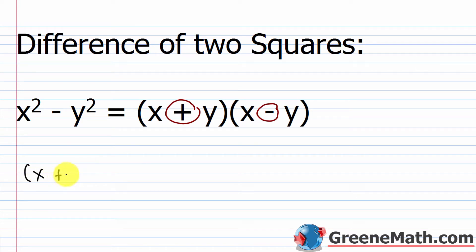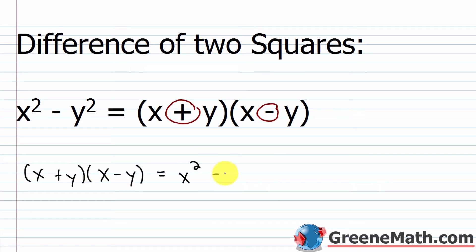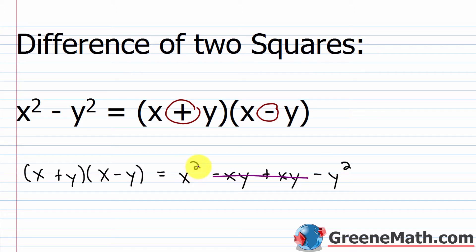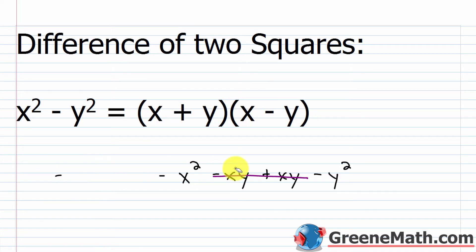This is based on the fact that if you do FOIL on the quantity x plus y times the quantity x minus y, those two middle terms cancel each other. x times x is x squared, the outer gives minus xy, the inner gives plus xy, and the last gives minus y squared. So you're left with x squared minus y squared. If you see something squared minus something else squared, you can quickly factor it using this technique.